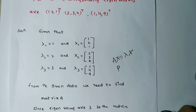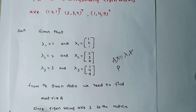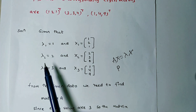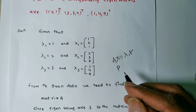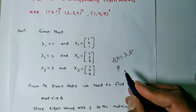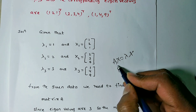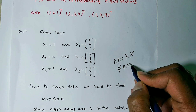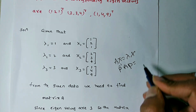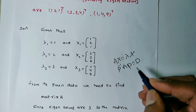The diagonal matrix D is formed with λ1, λ2, λ3 on the diagonal. Do you remember the property? P⁻¹AP = D. We know the diagonal matrix D, we know P, and from P we can find P⁻¹. Therefore we can easily find A.